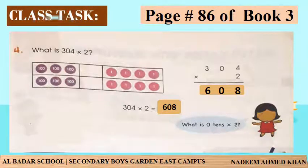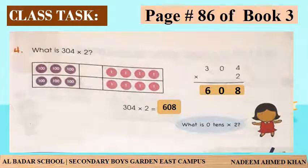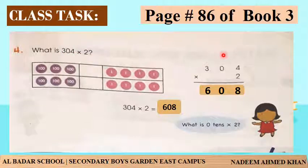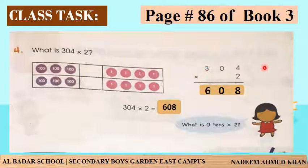Take out page number 86, book 3. The question is: what is 304 multiplied by 2? تو اس سوال میں ہم کیا کریں گے - 304 کو 2 سے multiply کریں گے۔ اب دیکھیں، اس کو ہم solve کرتے ہیں اور explain کرتے ہیں۔ یہ 304 لکھا ہوا ہے اور multiplied by 2، اور پھر یہ line draw ہوئی ہے اور یہ blank ہے۔